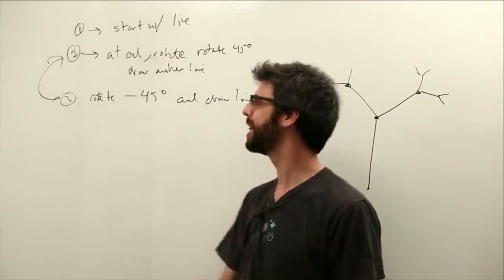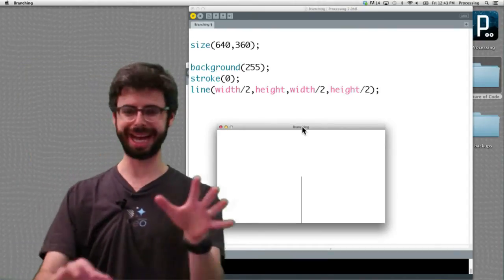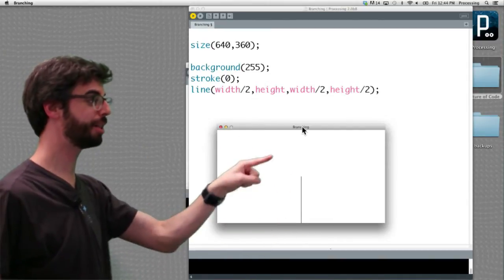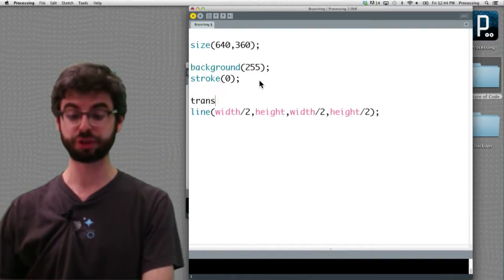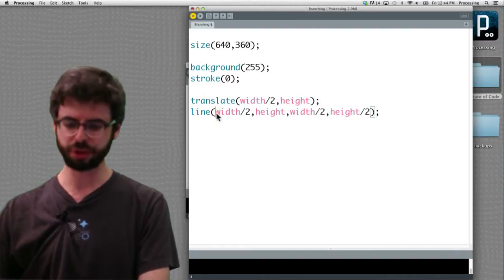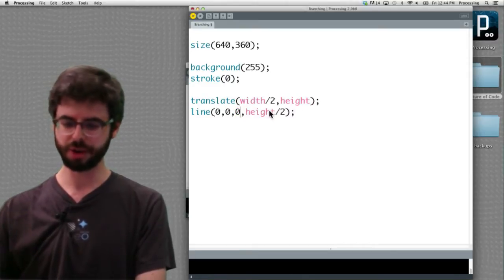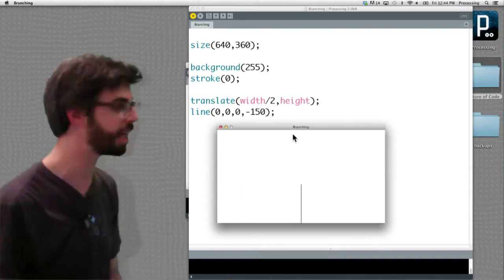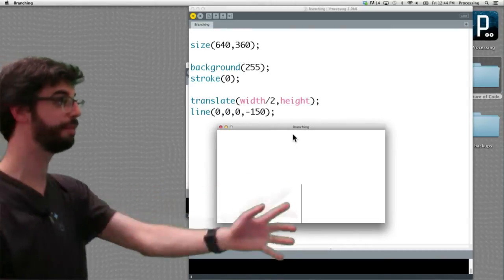So let's start to write code that implements this rule. Here, I have a very simple processing sketch. All that it's doing is it makes a window and it draws a line from the bottom of the window to the middle of the window. So let's write that in a slightly different way. What if the first thing I did was translate to the bottom of the window? Then what I'm really doing is drawing a line that goes from 0, 0 to 0, negative 150. Great.